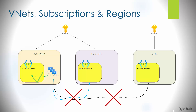A resource has to be connected to a VNet that exists in the same region and subscription. For example, resources can be deployed into a VNet in region UK South, Subscription X, but those same resources cannot be deployed into a VNet in East US because it's a different region, and cannot be deployed into a Japan East VNet in Subscription Y because both the region and subscription are different.